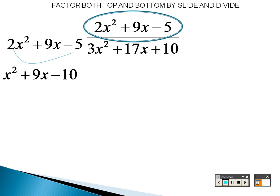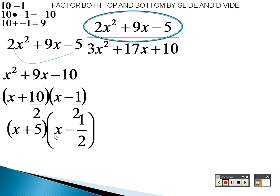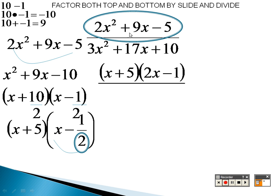What two numbers multiply to give you negative 10 that add to give you 9? 10 and negative 1, because 10 times negative 1 is negative 10, and 10 plus negative 1 is 9. So I have x plus 10 and x minus 1, but because I slid by 2, I need to divide by 2. 10 divided by 2 is 5, and the other gives x minus 1 half. Remember, this isn't a factor, this is a fraction. So I need to move that 2 over, and I actually end up with x plus 5 and 2x minus 1.